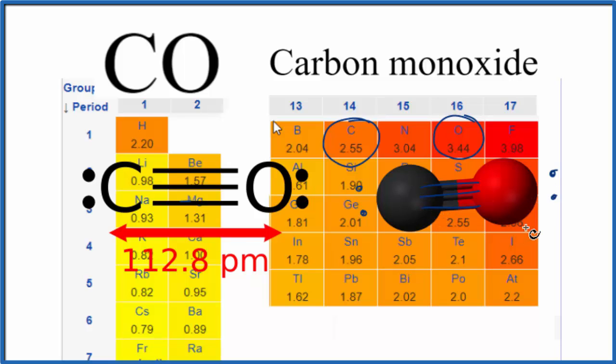And because our oxygen here is more electronegative, it's going to have a slight negative charge, a partial negative charge. The carbon will have a slight positive charge. That's because the electrons, the valence electrons, and these bonds here, they're going to spend more time around the oxygen because it's more electronegative.